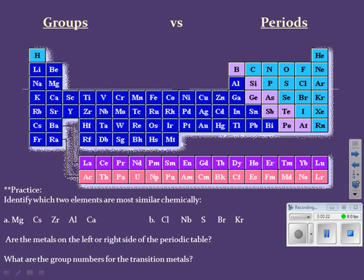First things first, you're going to need to know the difference between groups and periods on the periodic table. Groups are the columns — they go up and down. These are also known as families, and just like in your family, you may have similar characteristics as your brother or sister. These elements on the periodic table also have similar characteristics as they go up and down a family.